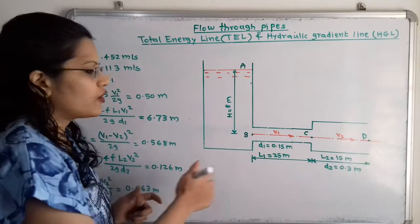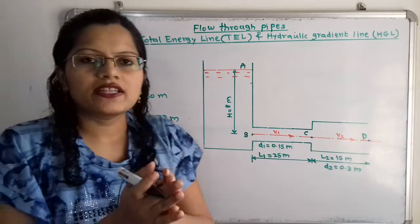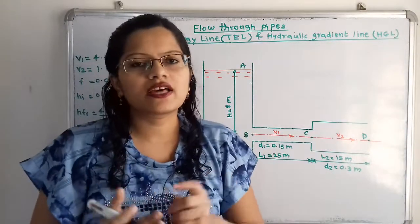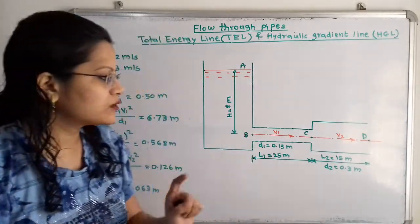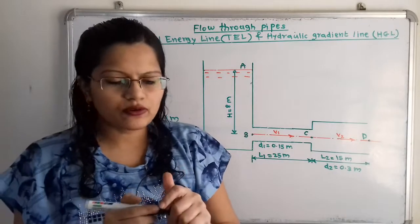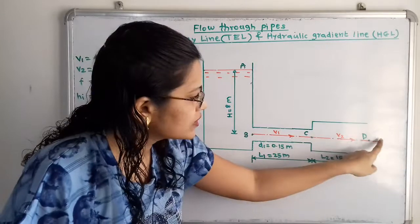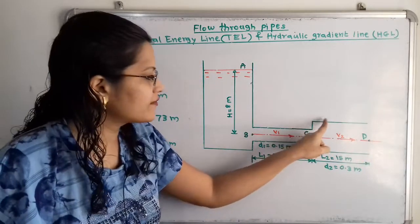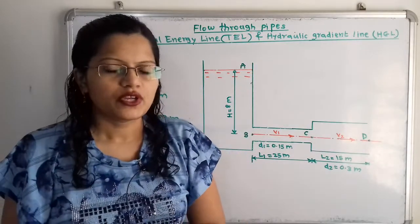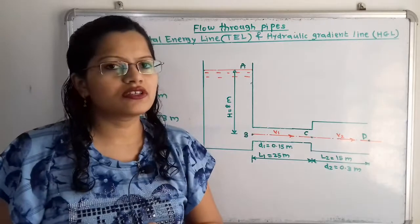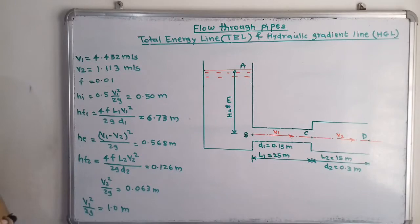At point C, when water enters from pipe one into pipe two, the diameter is getting increased, so there are losses due to sudden enlargement of the pipe, which we call he. When water flows through pipe two, again there are losses due to friction. Now we will calculate these losses one by one, starting with the head loss at the entrance of the pipe, which is hi.